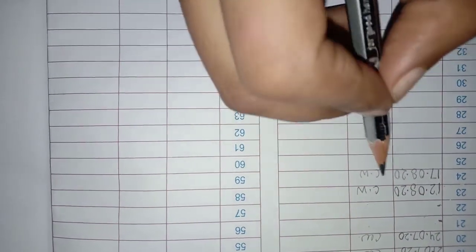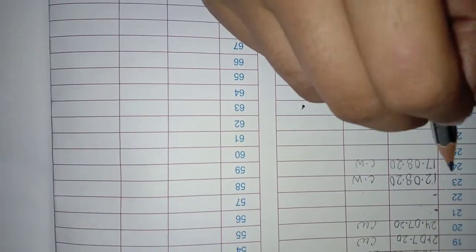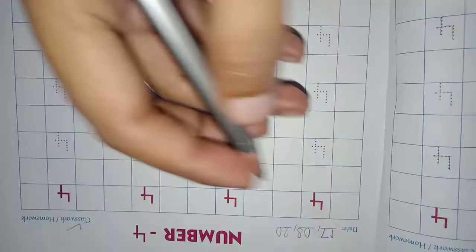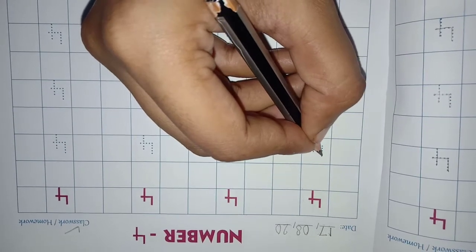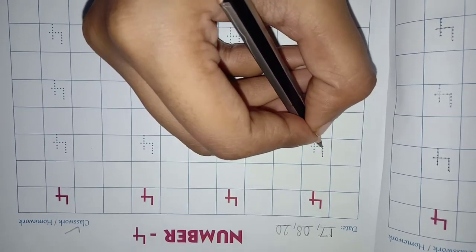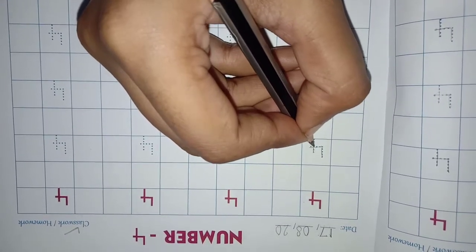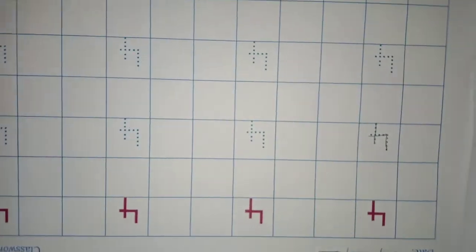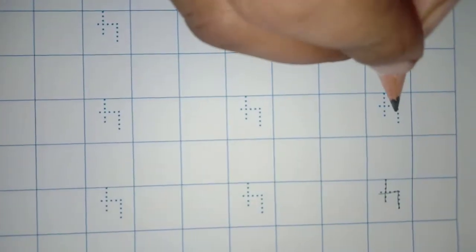Let's start tracing number 4. 4. Standing line, sleeping line, cut to sleeping line. 4. 4.